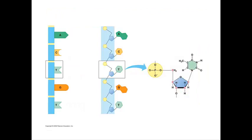DNA's nucleotides are symbolized by the letters A, T, C, and G. The letters represent the nitrogen bases that make up that particular nucleotide.